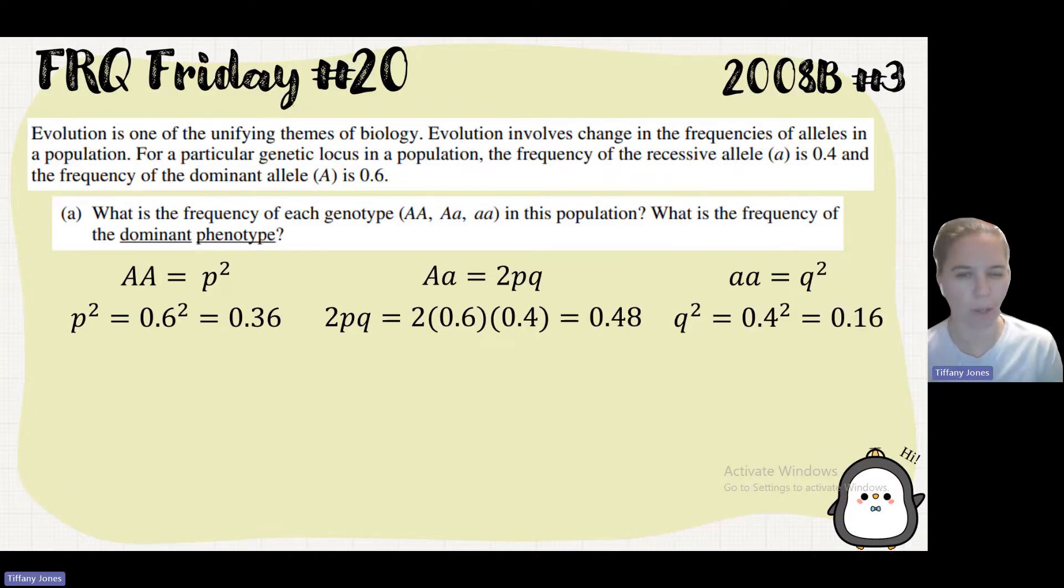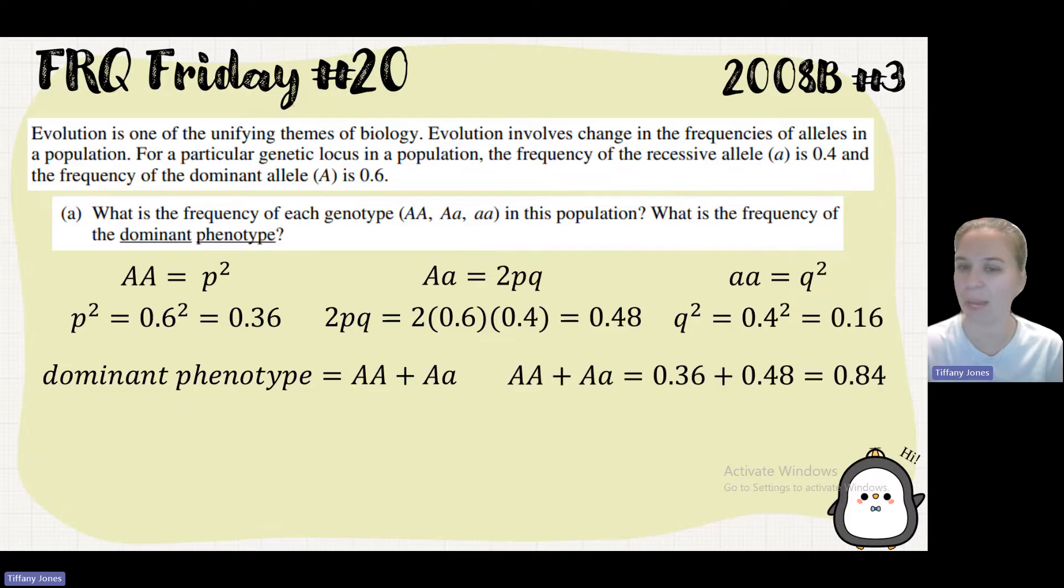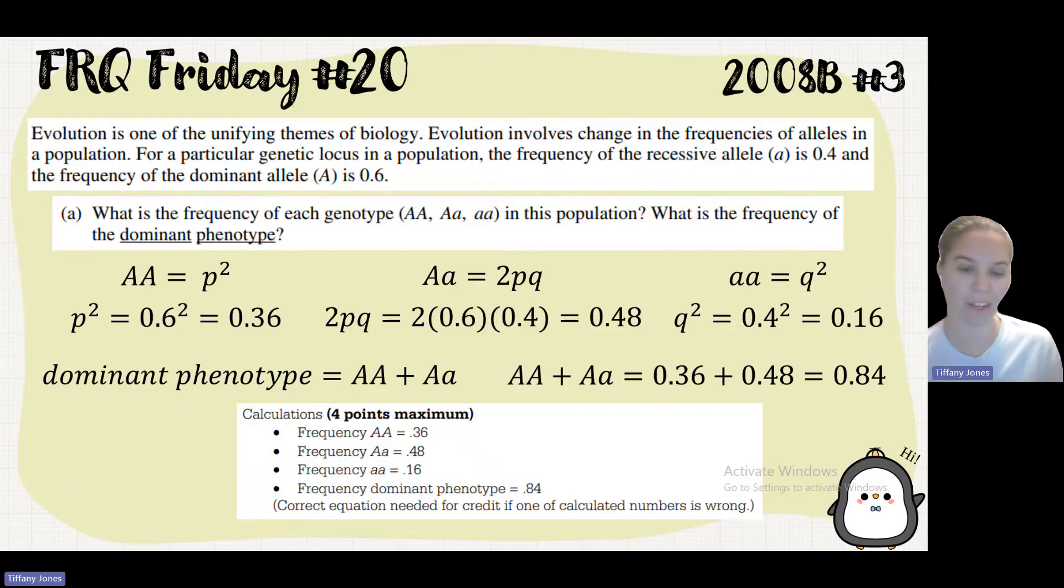And so the last part of the question says, what is the frequency of the dominant phenotype? Dominant phenotype is going to be those that are homozygous dominant and those that are heterozygous. So if I add those together, I'm going to find the frequency of the dominant phenotype, which would be 0.36 plus 0.48, which gives us 0.84.